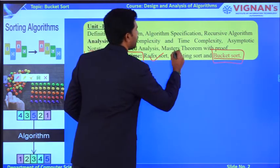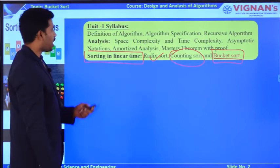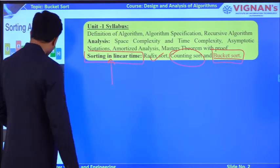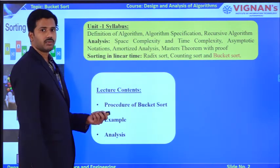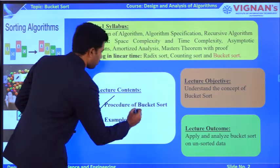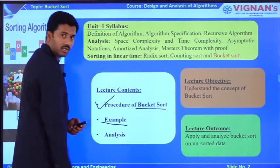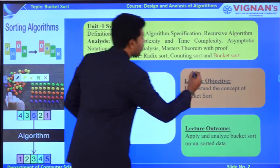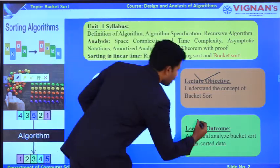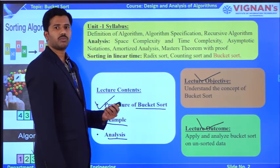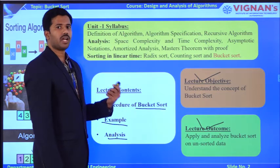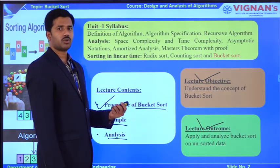In the current lecture we are covering bucket sort, and in the next lecture we are going to be covering counting sort. Likewise, we are completing the concepts in the sorting in linear time chapter. The main contents of this lecture are: first, the procedure of bucket sort, followed by one example, followed by analysis. The main objective is to understand the concept behind bucket sort. The main outcome is that you will be able to apply bucket sort to an unsorted array to convert it to sorted manner, as well as perform analysis.